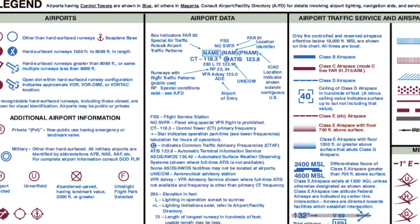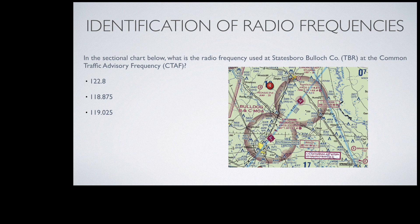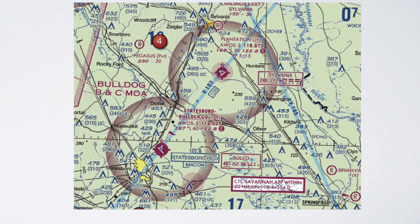In the sectional legend, you'll notice that the C in a circle is next to the ATIS frequency. So the sectional legend is saying that 123.8 is used for ATIS, which is recorded airport information, but it's also used as the CTAF frequency. Now back at our question — if you look at the Statesboro Airport, the C in a circle is next to the frequency of 122.8, which means that this frequency is the CTAF frequency.